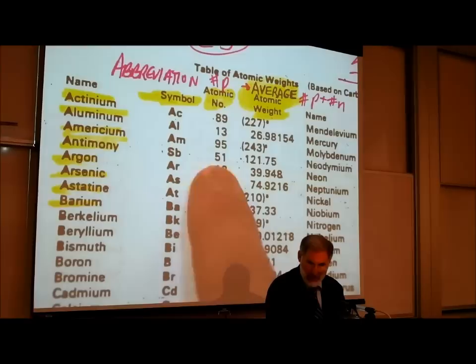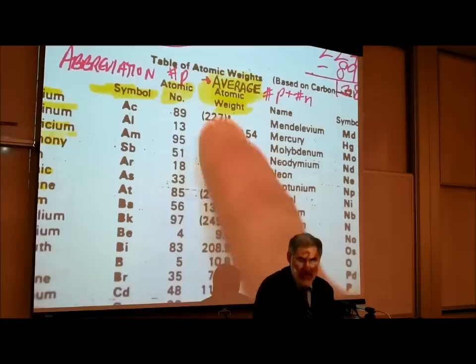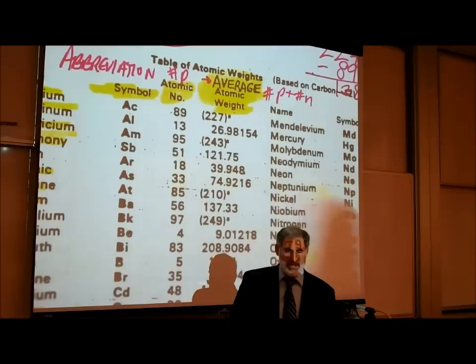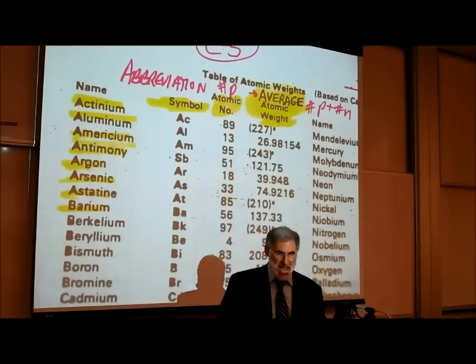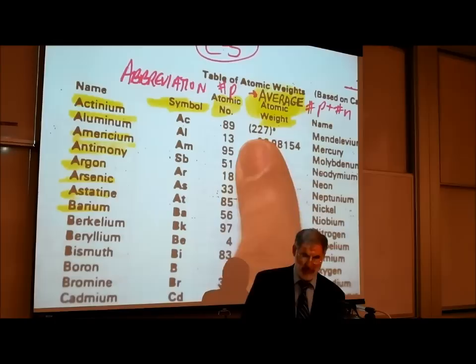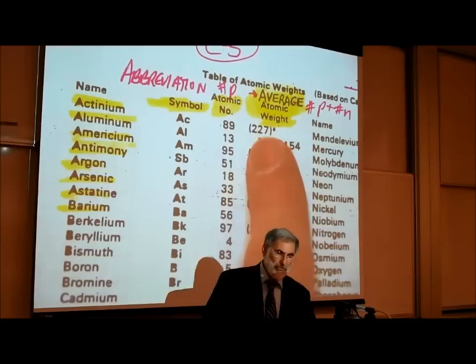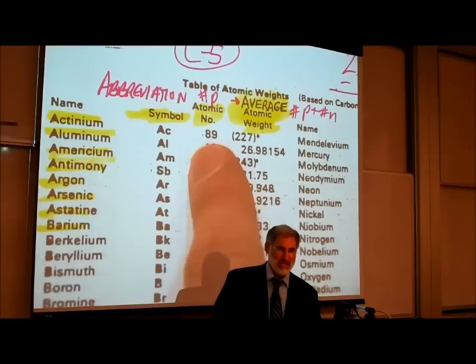The next thing listed is the average atomic weight. Remember that how much an atom weighs is determined by the number of protons plus the number of neutrons it has. Actinium has a weight of 227 — that's its total of protons plus neutrons. If we know the weight and we know the atomic number, we can determine the number of neutrons by subtracting: 227 minus 89 tells us the number of neutrons.